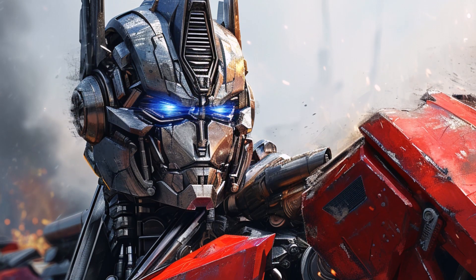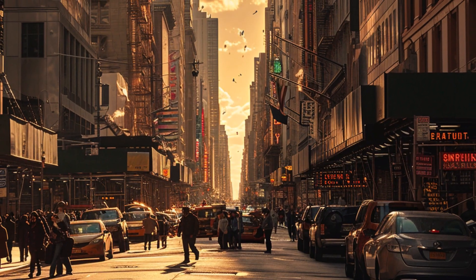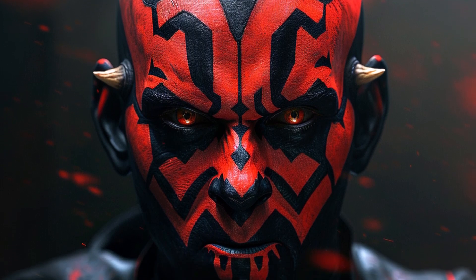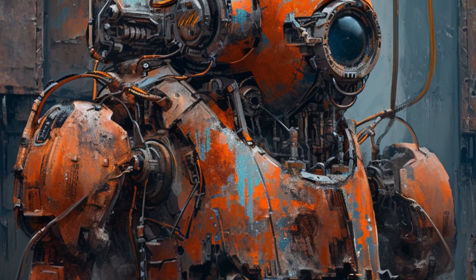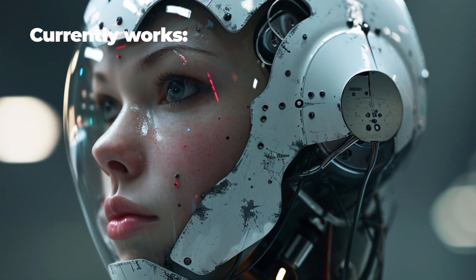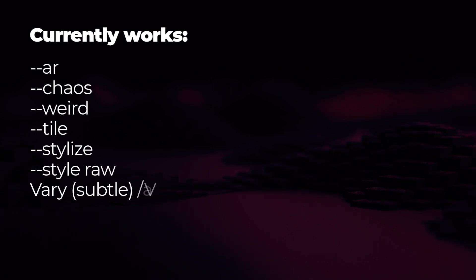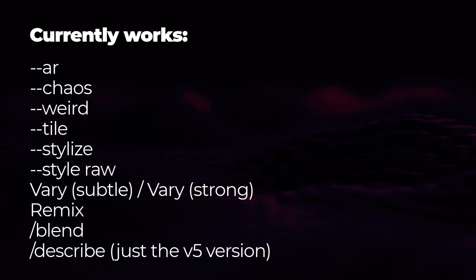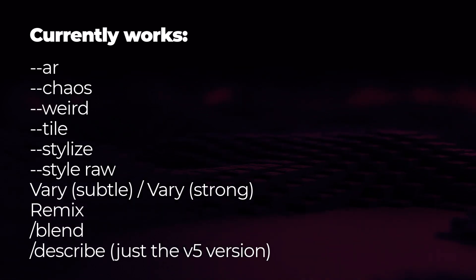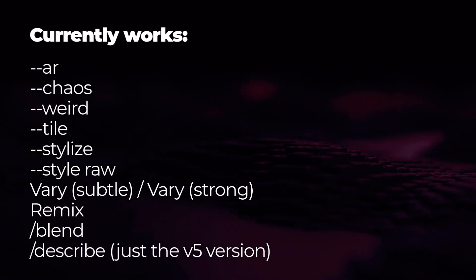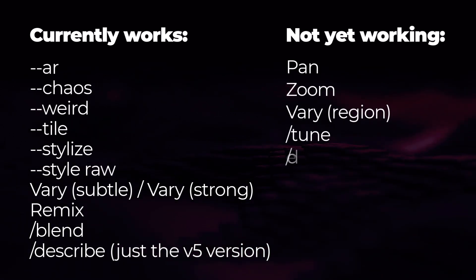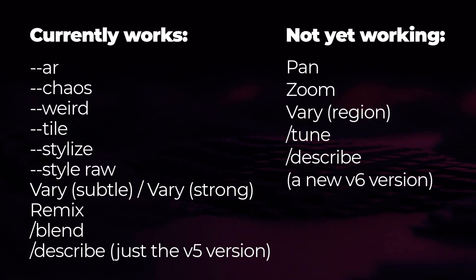This is still just the early days — this is not what version 6is actually going to end up at. They're still refining and changing it, so there are still improvements to come. Currently available features include aspect ratio, chaos, weird, tile, stylized, style raw, as well as vary, remix, blend, and describe — though just the version 5 version of describe.